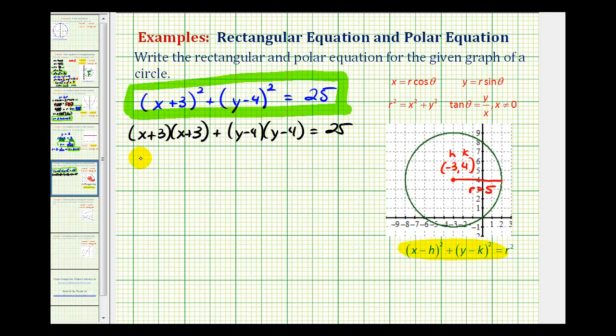So here we're going to have x squared plus three x plus three x, that's plus six x plus nine, plus here we'll have y squared, and then minus four y minus four y, that's minus eight y, plus 16 equals 25.